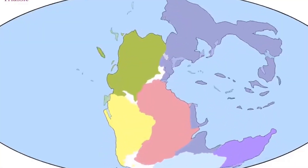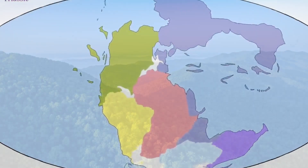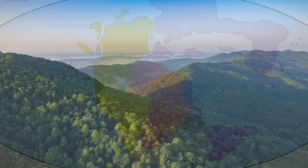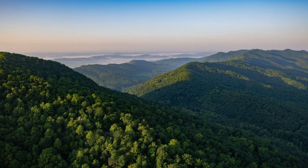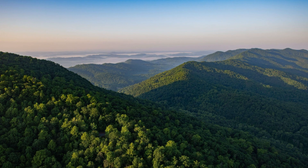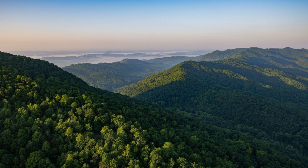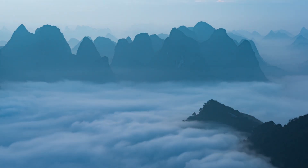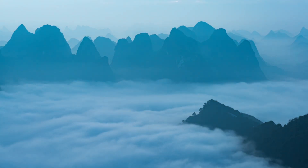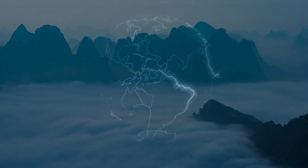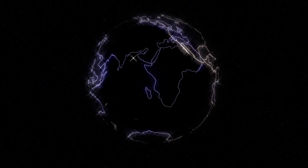Similarly, the Appalachian Mountains began to take shape around 480 million years ago during the same geological period. These mountains formed as a result of the collision and convergence of several ancient landmasses, including Laurentia and Gondwana, which eventually became North America.